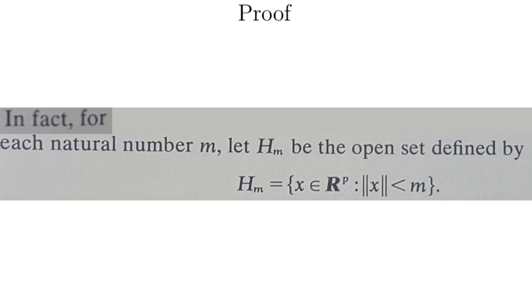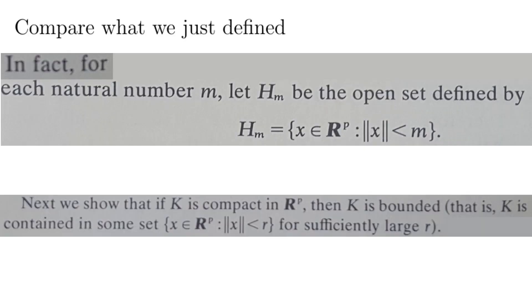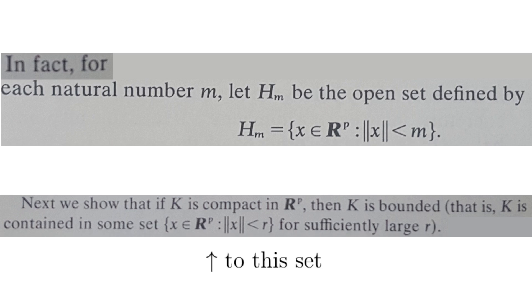Proof. In fact, for each natural number m, let H_m be the open set defined by H_m equals the set of all x in R^p, such that the norm of x is less than m. We have now defined another collection of sets. The reason he says in fact is because the idea for the definition comes directly from the definition of boundedness. We just use natural numbers for the radius.